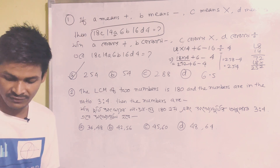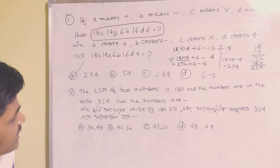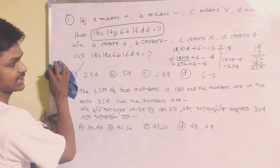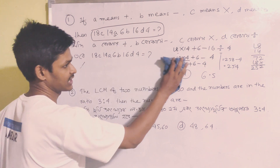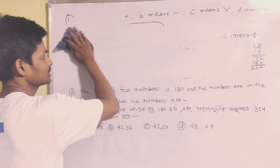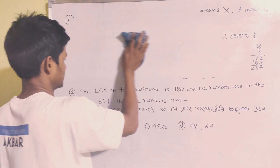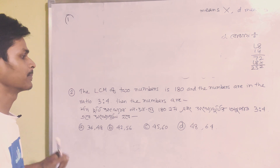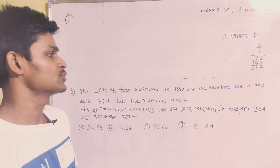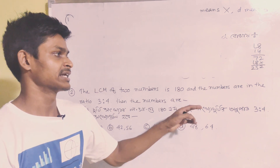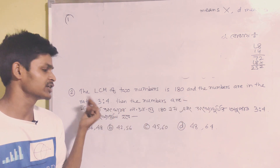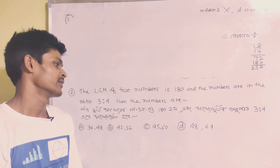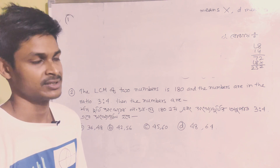Note down and practice. Next question: The LCM of two numbers is 180 and the numbers are in the ratio 3 to 4.